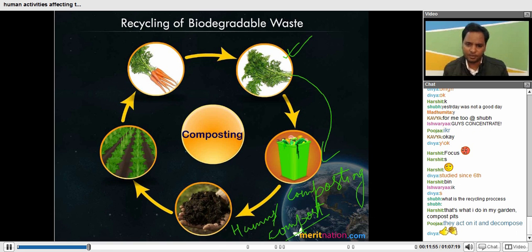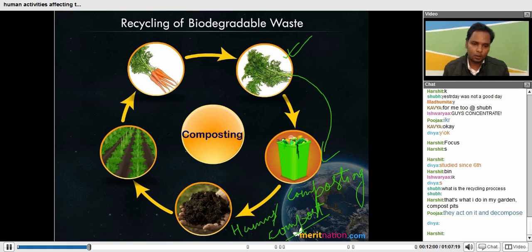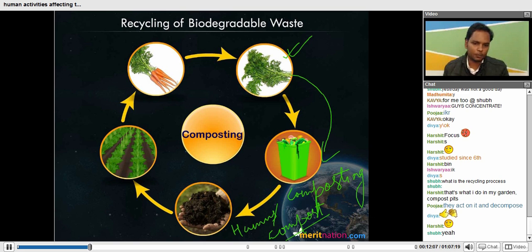Like waste of vegetables - people used to just throw it outside their house. Why do you want to throw it? Just make a mud pot, then put it inside. Take only two or three mud pots in your house, or at your terrace.